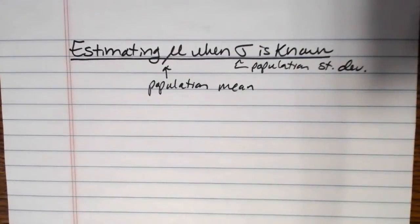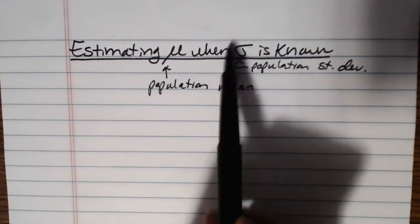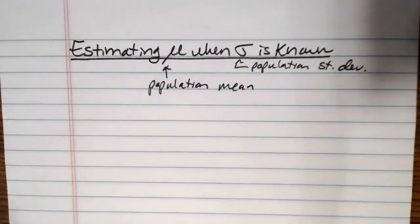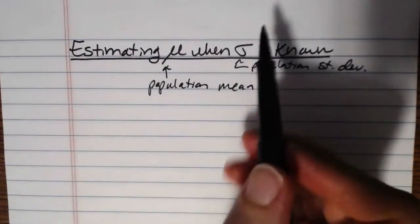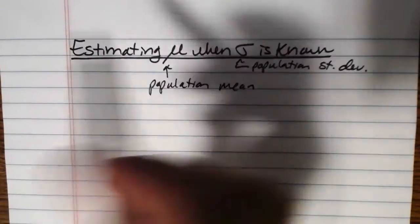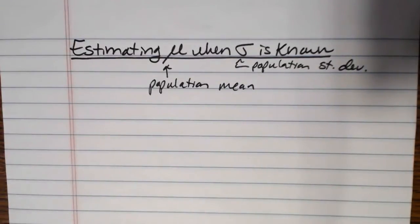What I can tell you is that this scenario doesn't come up all that often. It is very rarely the case that you would know the population standard deviation but you would not know the population mean. It does happen occasionally, usually when you have a previous study that has provided an estimate of the population standard deviation, and you're building upon that research to do a new estimate of mu. The more likely scenario is that you're going to be estimating mu and sigma is unknown, but that has a different methodology.